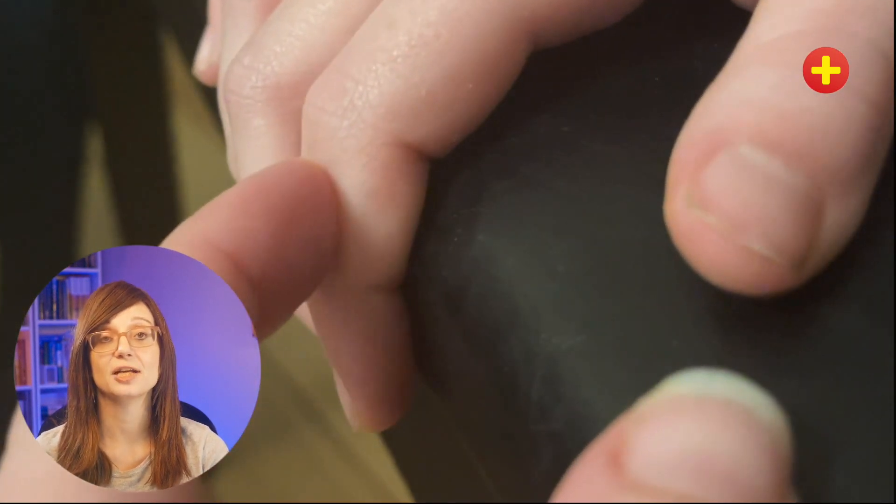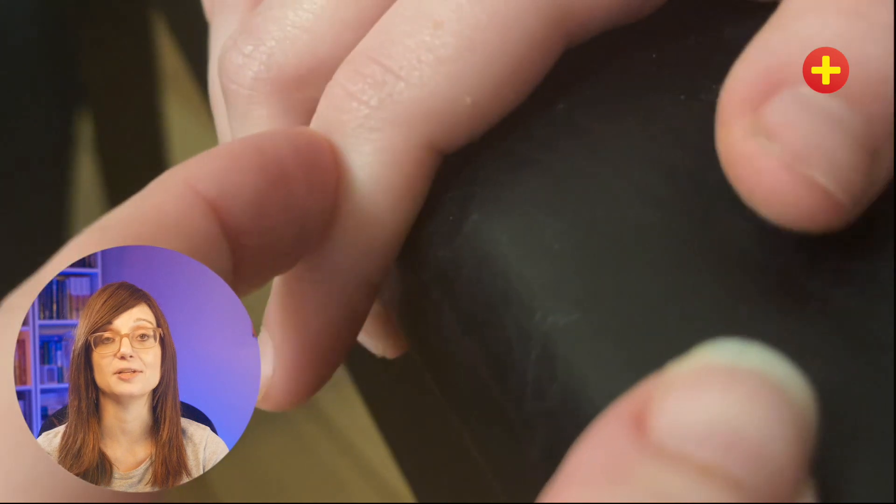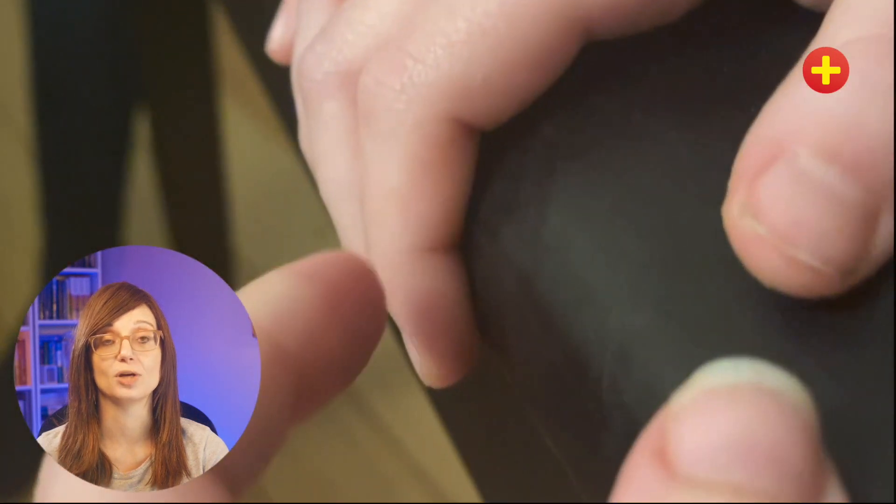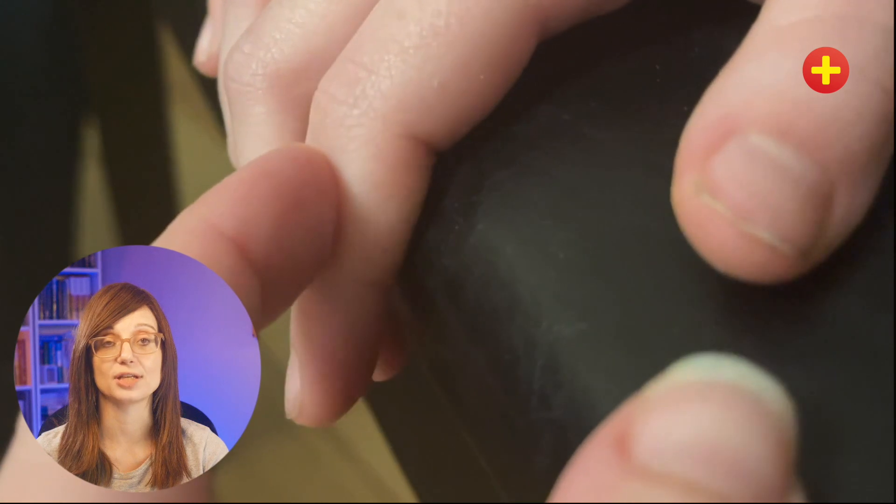For Elson's test, ask the patient to bend the affected finger at the PIPJ 90 degrees over the edge of a table and ask them to extend the middle phalanx against resistance.